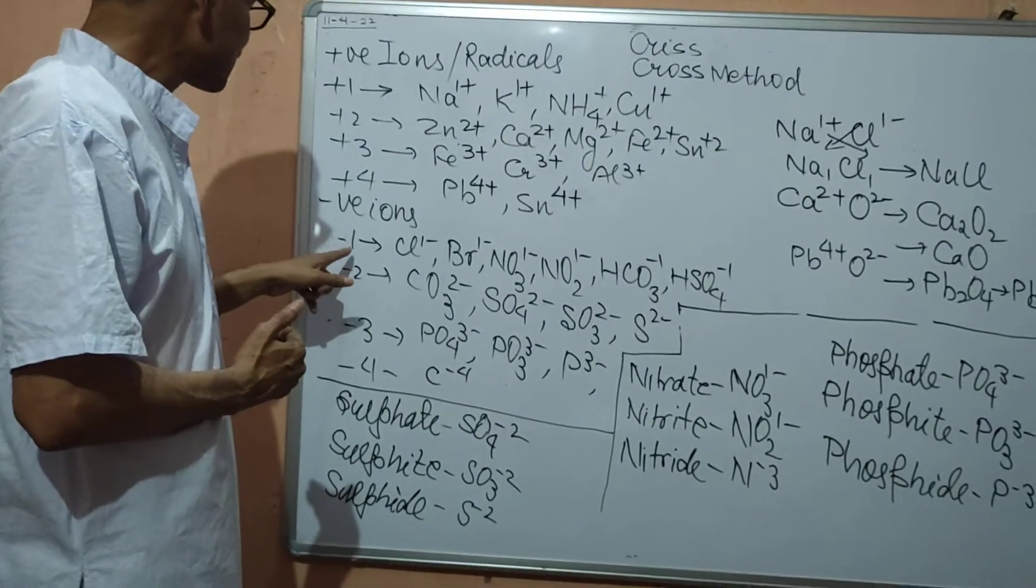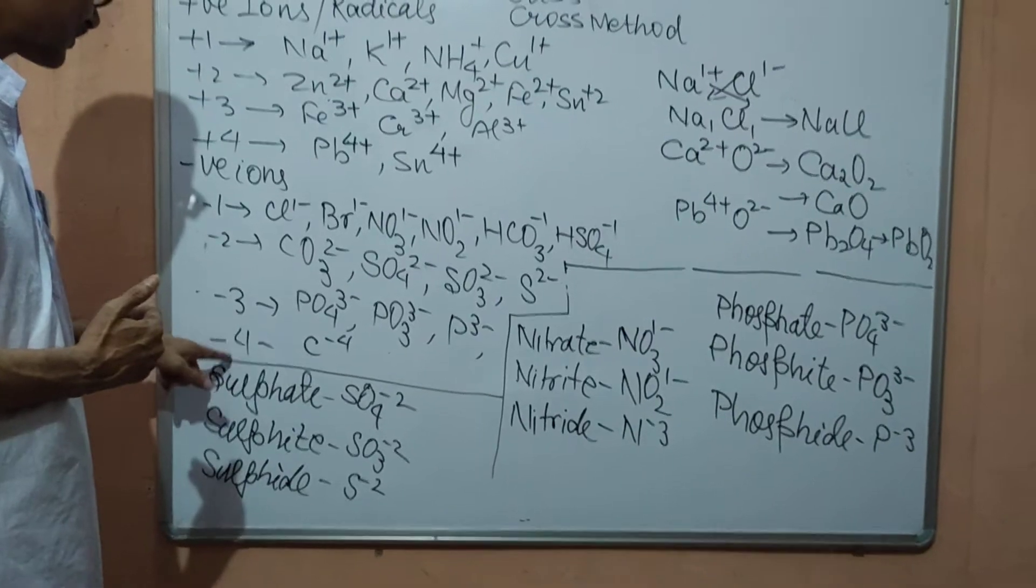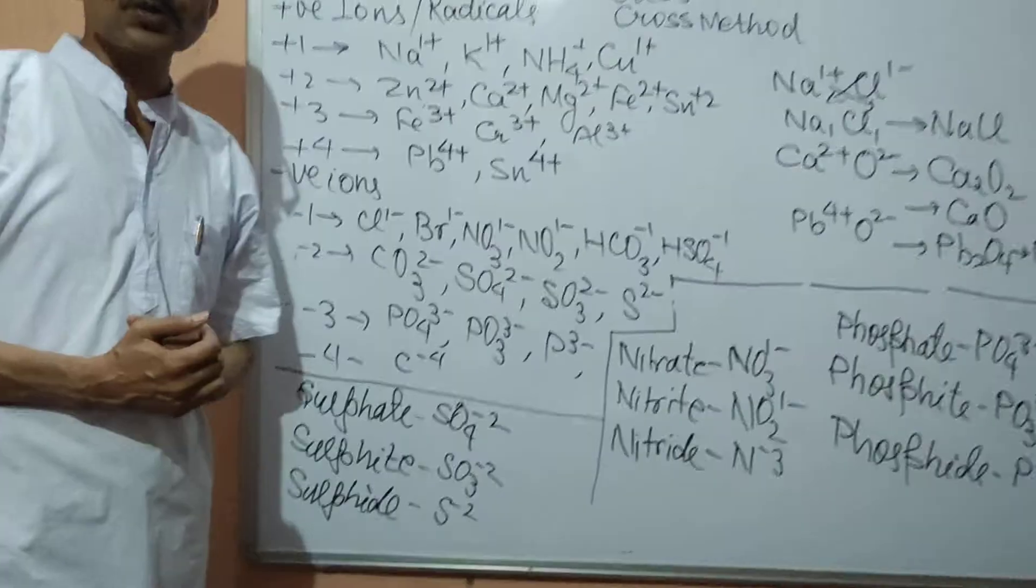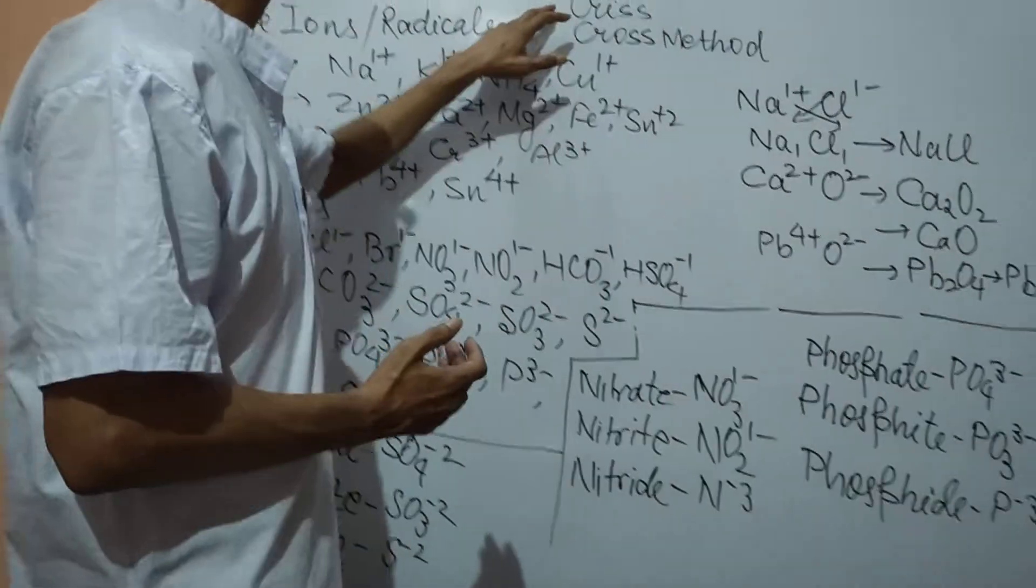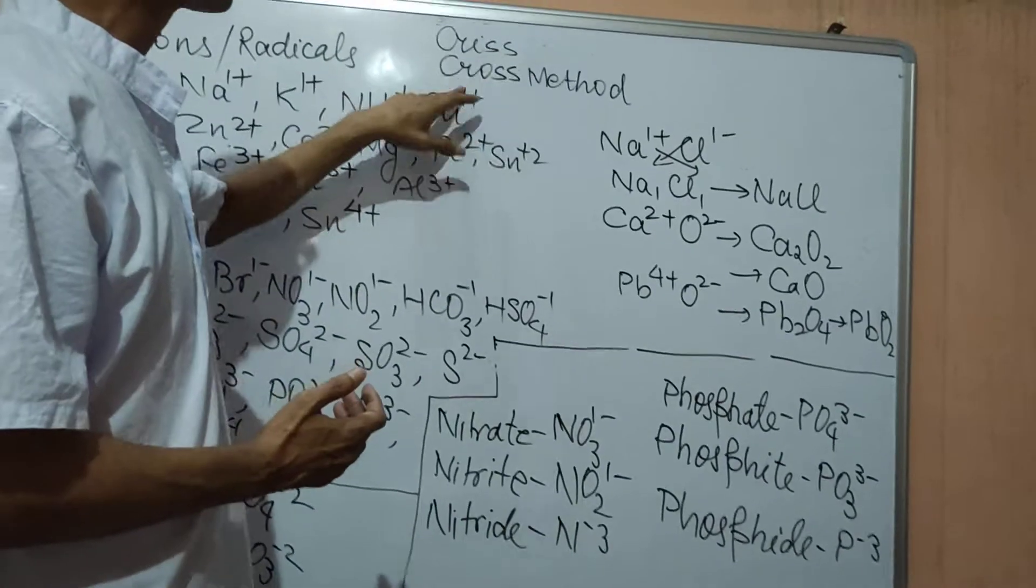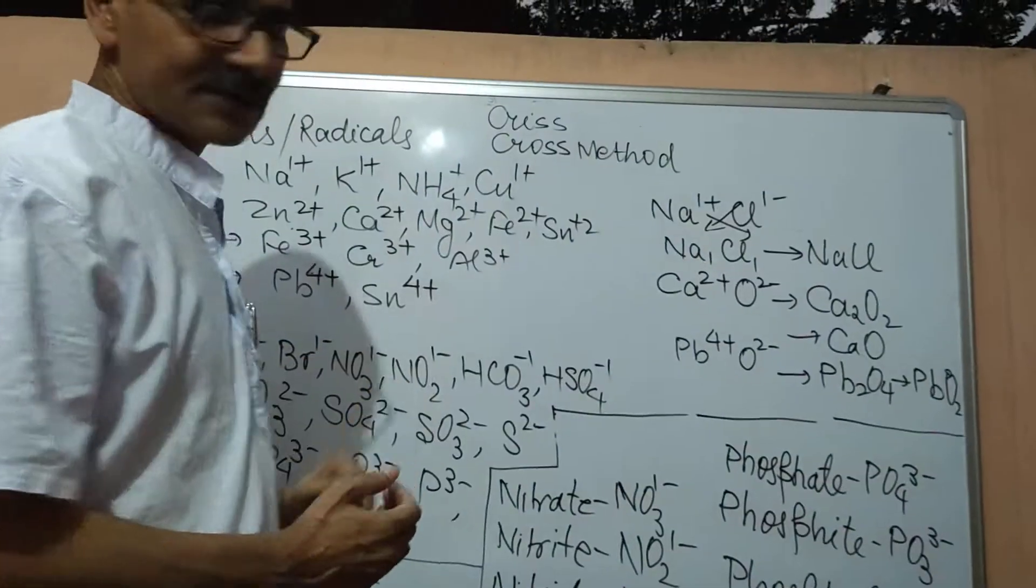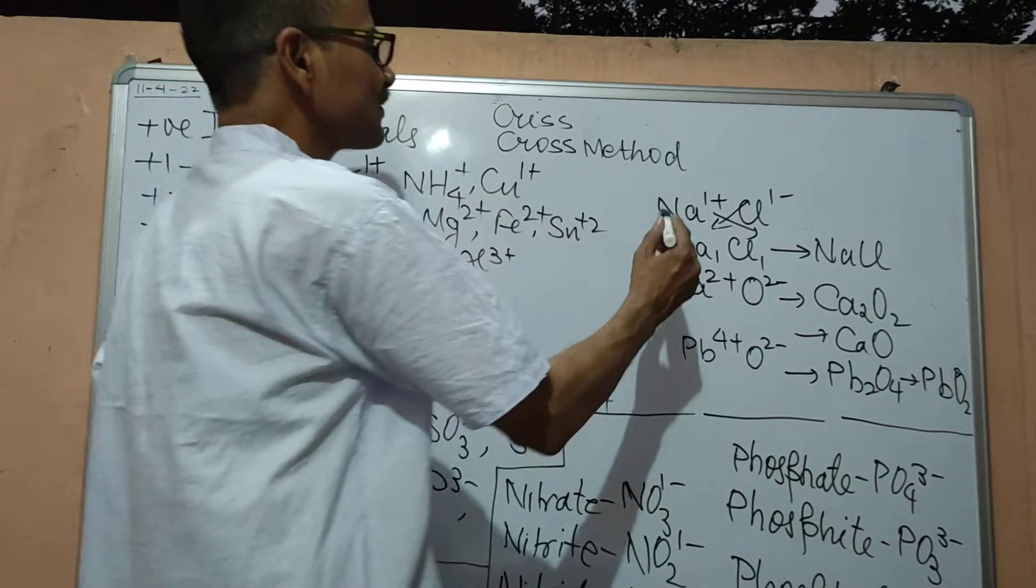Negative ions, of course again similarly, minus 1, minus 2, minus 3, minus 4. Now here to write the formula. To write the formula, we use the method criss-cross method. In this criss-cross method, we exchange the valency.